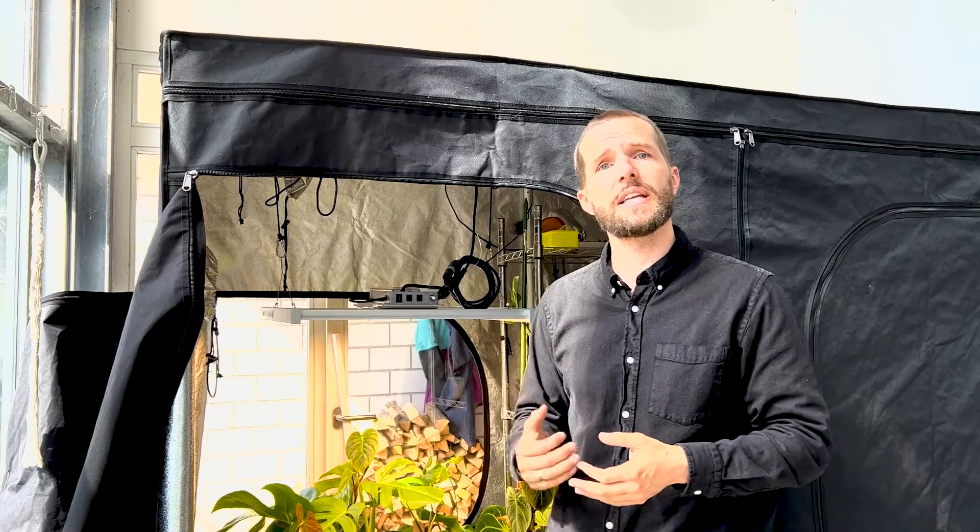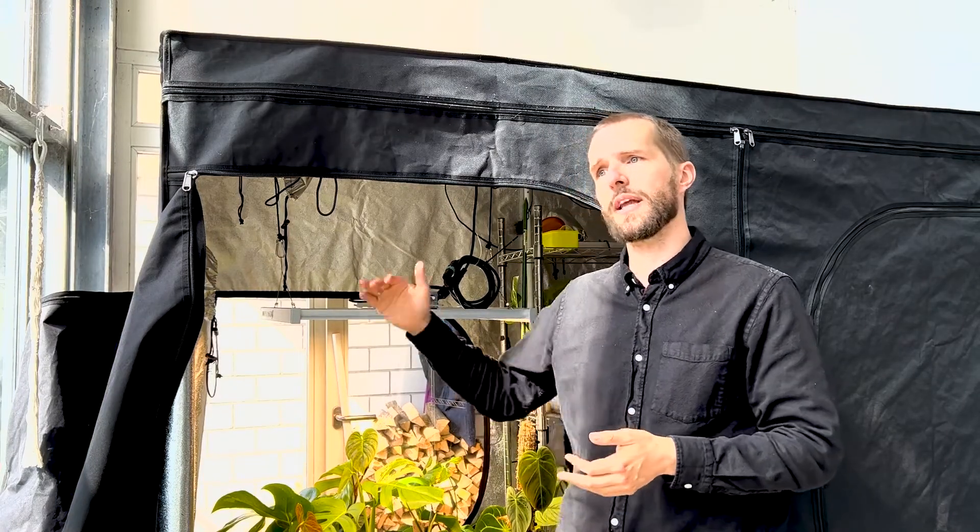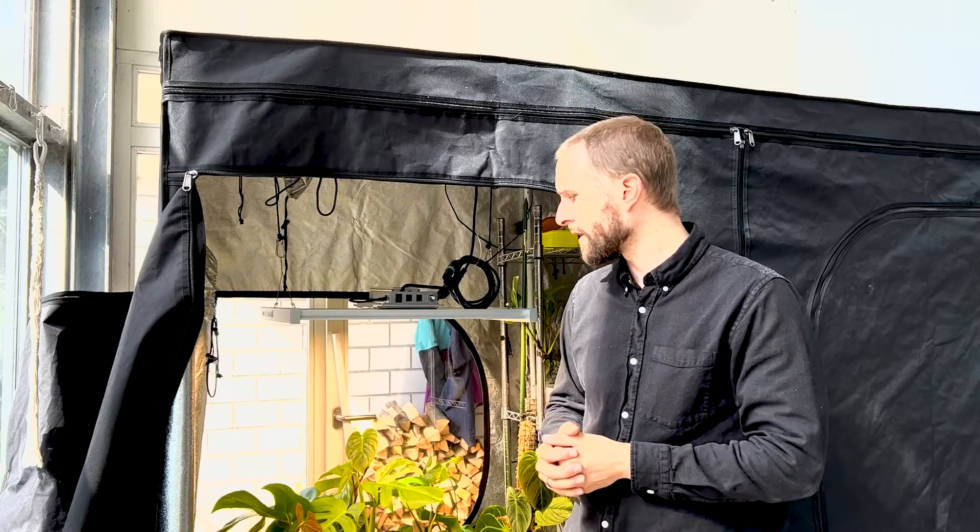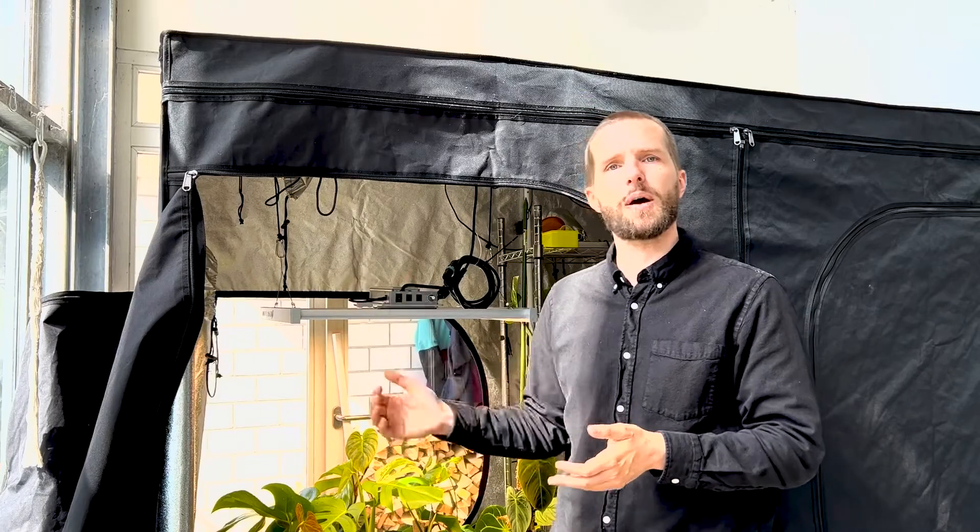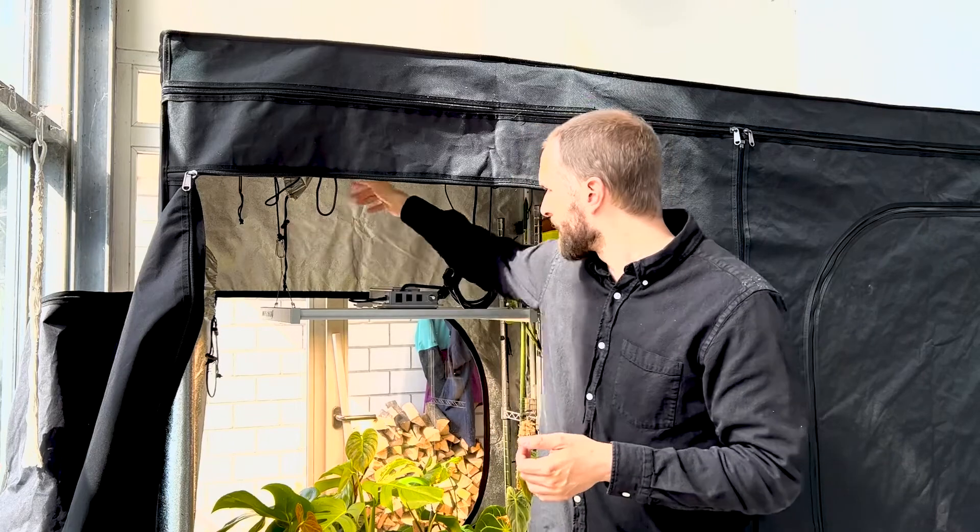It comes with two hangers so you can easily adjust it in your grow tent and also on your shelf. So if you have smaller plants, seedlings, you want to put it lower. If you have taller plants you want to put it further up so it doesn't burn the leaves, which is also great. So it comes with these already within the package.